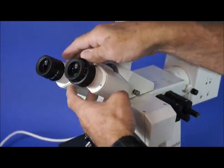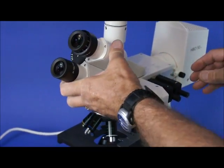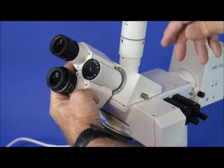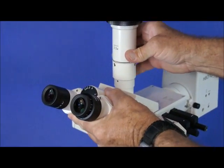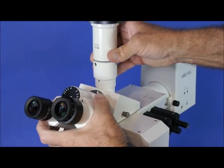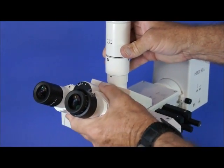This is the type of binocular that rotates 360. We can't go all the way around 360 with it right now because we have it outfitted with a .5X adapter for phototube and adapting with a camera.